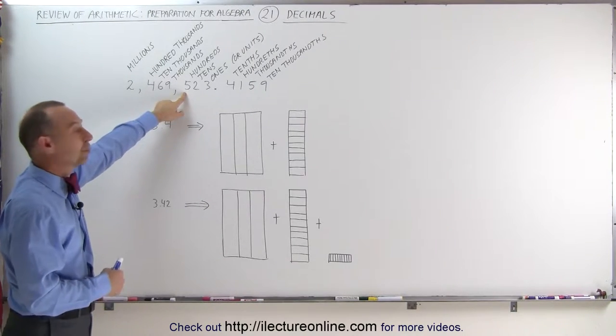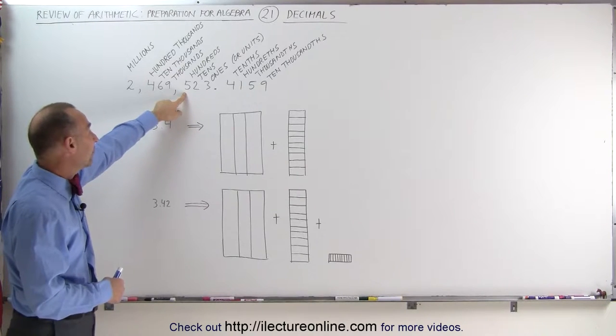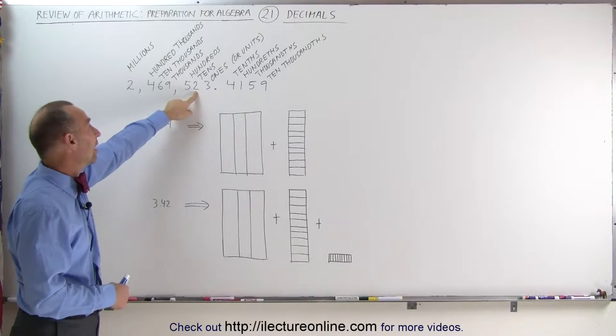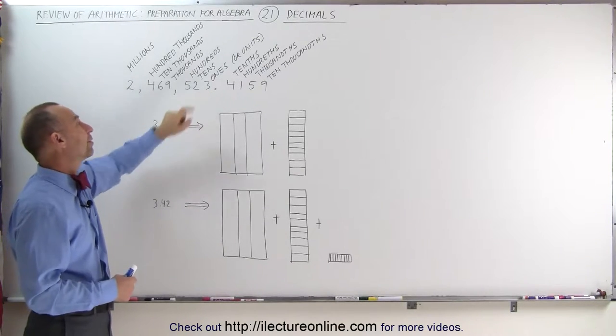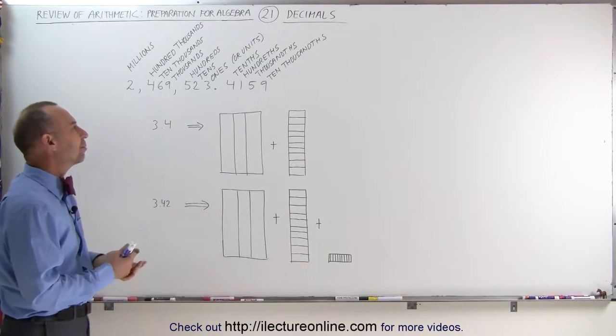Then we get into this number here, which represents how many hundreds you have, 5 of them. How many tens you have, 2 of them. And how many ones you have, or units you have, 3 of them. Then we have a decimal place.